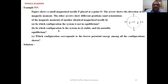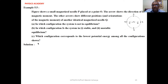In which configuration is the system in stable equilibrium, and in which is it in unstable equilibrium? Which configuration corresponds to the lowest potential energy among all the configurations shown?